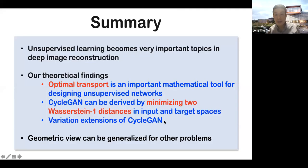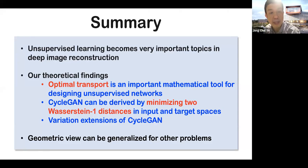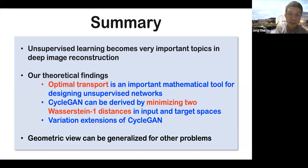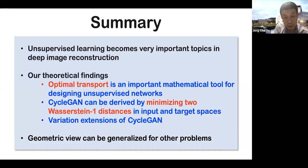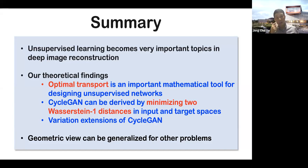In summary, unsupervised learning is very important in medical imaging and inverse problems. Optimal transport formulation is useful and has a close relationship with penalized least square in terms of transportation cost. Using this geometric view, we can generalize the framework for various problems depending on whether the forward physics is unknown, partially known, or completely known. Thank you very much.